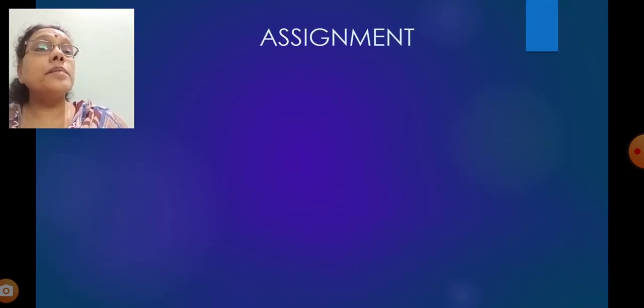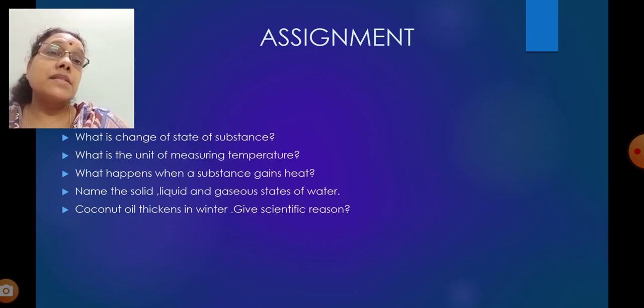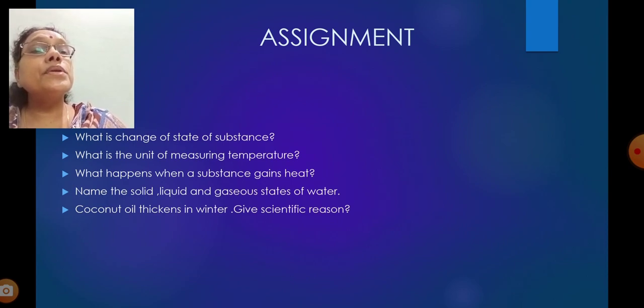Next is assignment. You have to write the answers. What is change of state of substance? The answer is given. What is the unit of measuring temperature? All know that, degree Celsius. What happens when a substance gains heat? It changes its state. Name the solid, liquid and gaseous states of water. Very simple: solid ice, liquid water, gaseous water vapor.